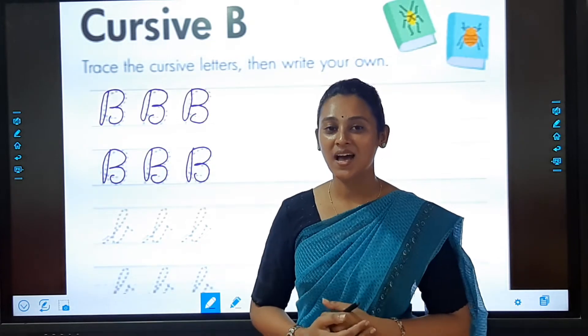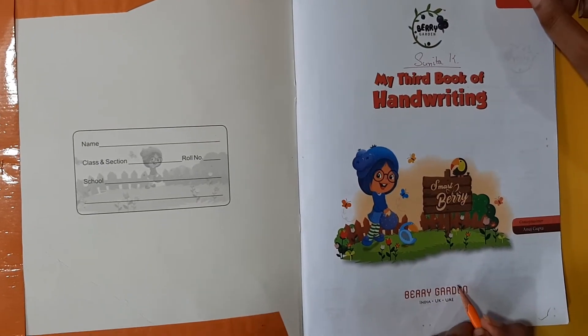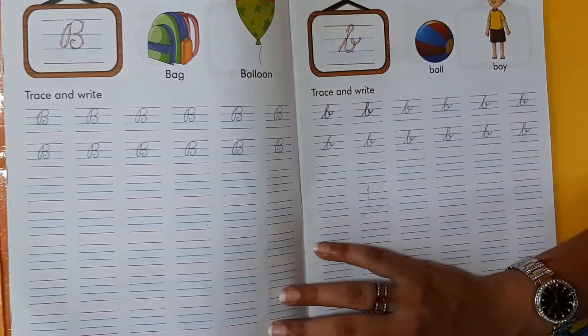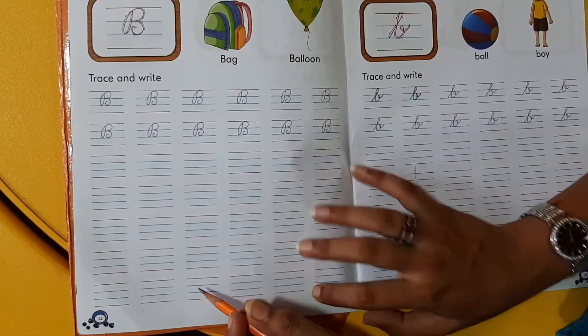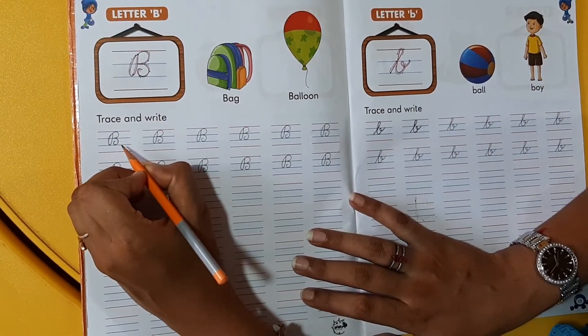Now we will trace in our next book. So students, please take out your textbook. My third book of handwriting, page number 12. Okay. Firstly, we will trace B in our book.